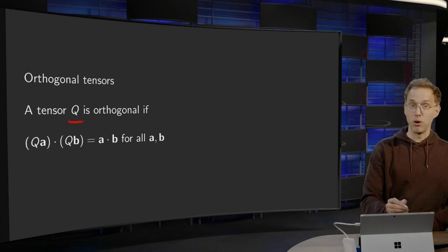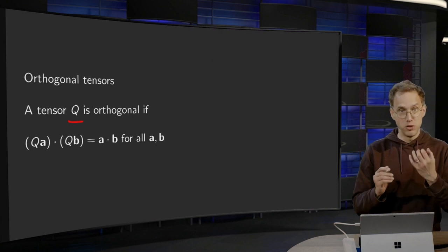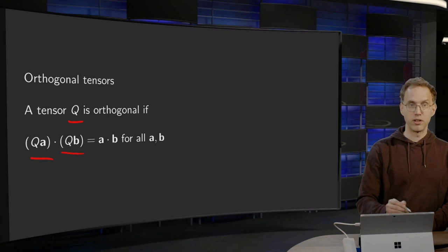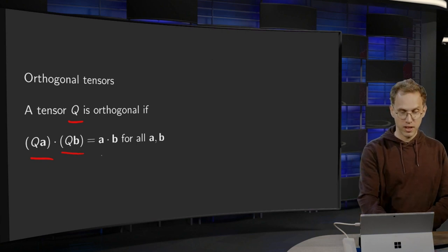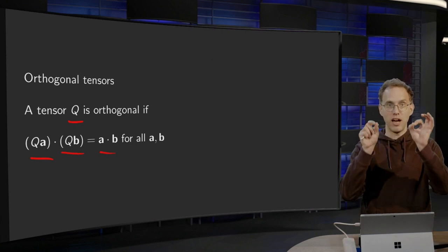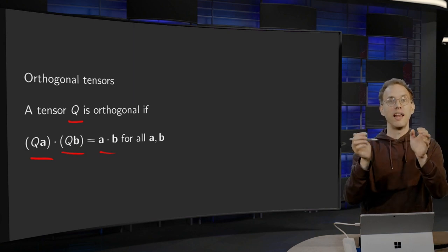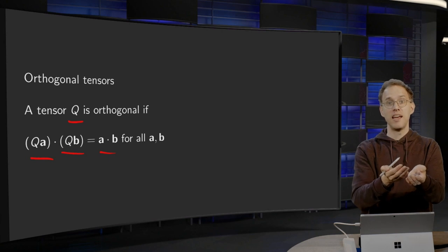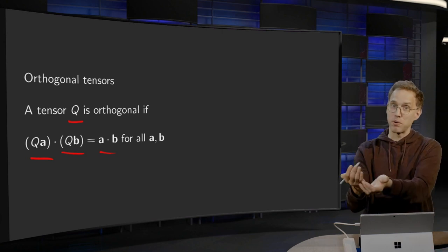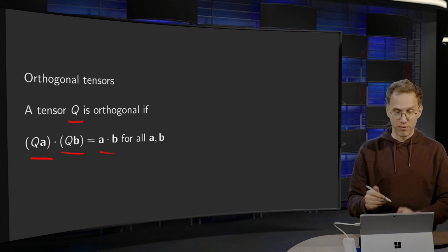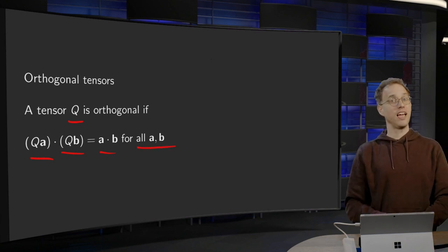A tensor Q is called orthogonal if it preserves the inner product. That means (Qa)·(Qb) = a·b. So you have vectors a and b, compute Qa and Qb, and the inner product between the original vectors must be the same as the inner product between the transformed vectors, for any vectors a and b.